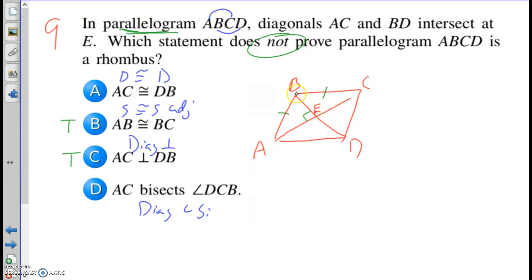AC congruent to BD, the diagonals congruent, that is not a rhombus property, that is a rectangle property. And then the last one, AC bisects angle DCB, this is true for a rhombus. Now all parallelograms, they bisect each other. But in the rhombus, the first time that we see the diagonals are angle bisectors. The angles are being bisected by the diagonals and they're bisecting each other as well.